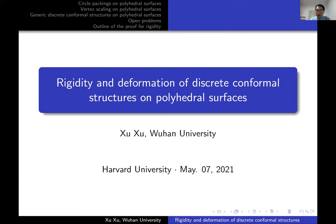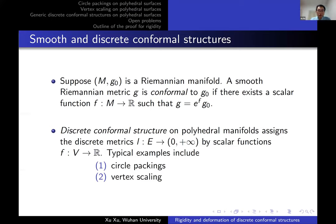I will talk about the rigidity and deformation of discrete conformal structures on polyhedral surfaces. A discrete conformal structure on polyhedral manifolds is a discrete analog of the smooth conformal structure on manifolds. It assigns a discrete metric defined on edges by scalar functions defined on the vertices.